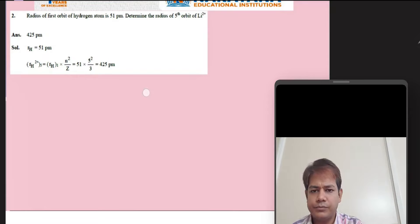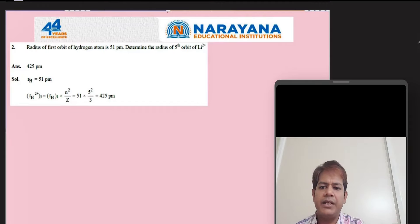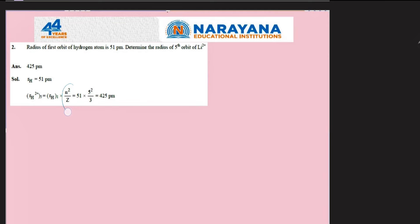This is a question from atomic structure. The radius of the first orbit of hydrogen is given and we have to find the radius of the fifth orbit of Li2+. We know that radius is proportional to n²/Z. For the first orbit of hydrogen, n²/Z = 1. The radius of the fifth orbit of lithium will be the radius of the first orbit of hydrogen multiplied by n²/Z, where n=5 and Z=3 for lithium. So 5²/3 gives 425 picometers. The answer is 425 picometers — an easy question based on the formula radius ∝ n²/Z.